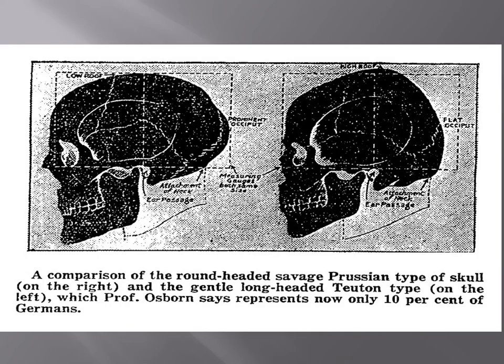They were making comparisons of subgroups like the round-headed savage Prussian type with the gentle long-headed Tutin type, even making distinguishing categories within individual cultures like German cultures. This actually comes out of a book that sat on Adolf Hitler's bookshelf.